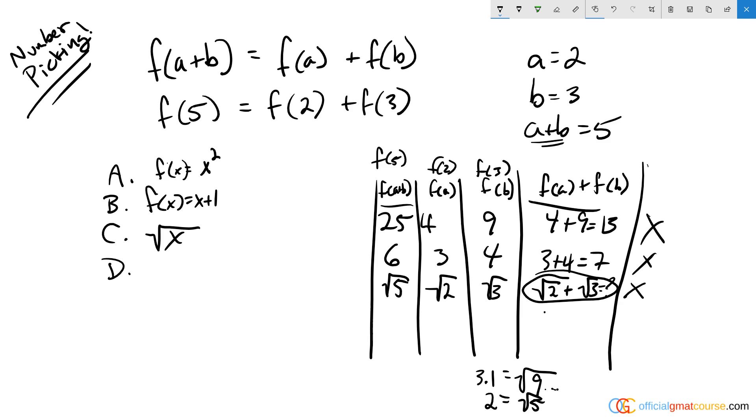Looking at answer choice D, we know f of x in D is equal to two over x. So we would have two over five versus two over two plus two over three. Two over two is equal to one. So one and two-thirds versus two-fifths, that's definitely not equal. This is going to be greater than one, this is way less than one, which means E has to be our answer.